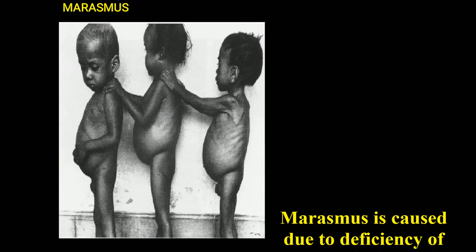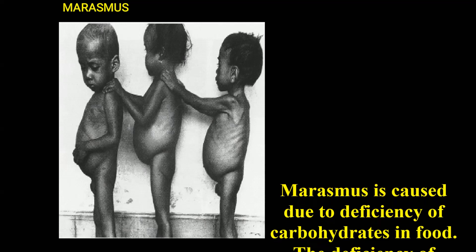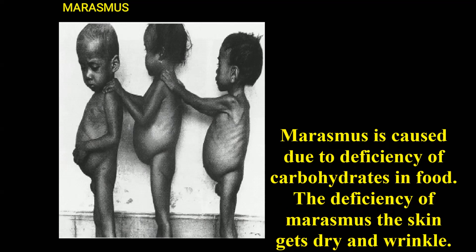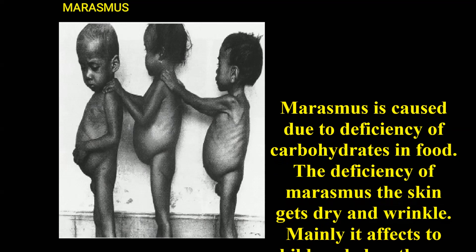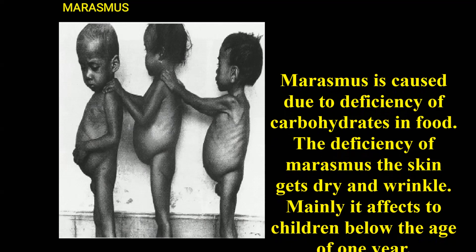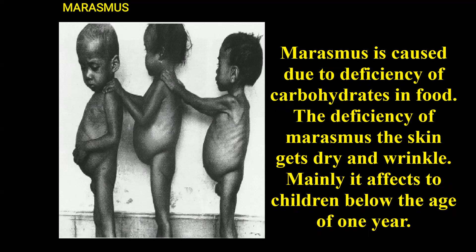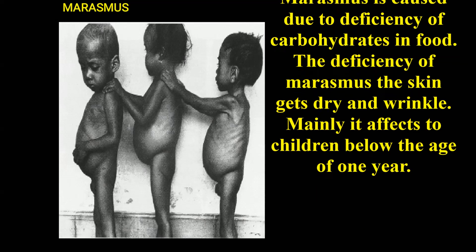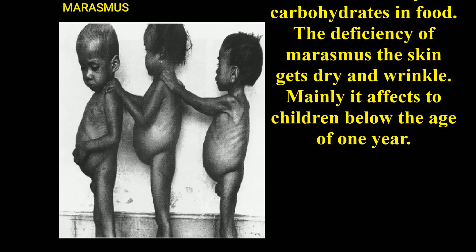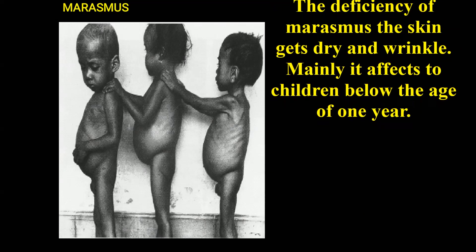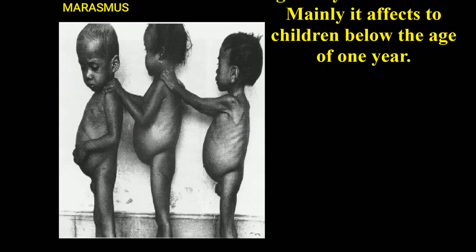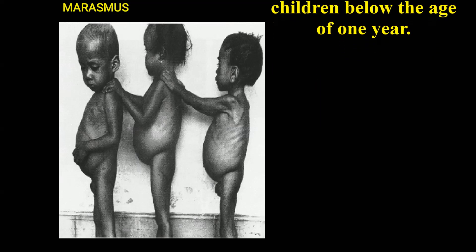Marasmus is caused due to the deficiency of carbohydrates in the food. In marasmus, the skin gets dry and wrinkled. It mainly affects children below the age of one year.